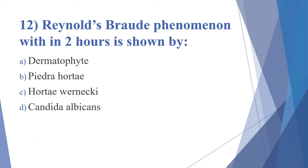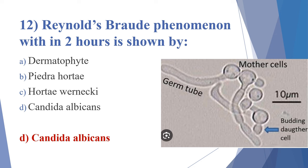Twelfth question: Reynolds' broad phenomenon within two hours is shown by — options: dermatophyte, Piedra horta, tinea versicolor, Candida albicans. The answer is option D, Candida albicans. A germ tube is a short hyphal or filamentous extension arising laterally from a yeast cell with no constriction at the point of origin, seen in Candida albicans and Candida dubliniensis.